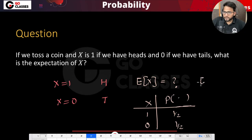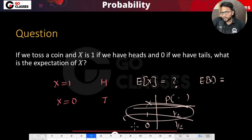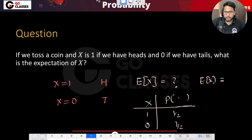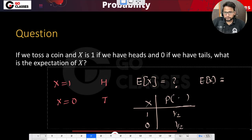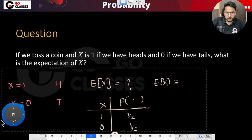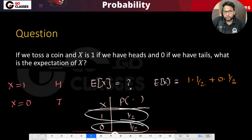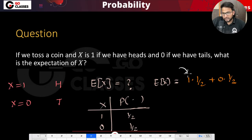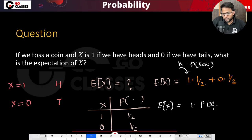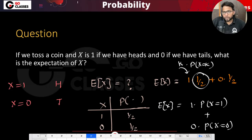The expectation of x is computed by multiplying each value by its probability and summing them up. So it is one times one-by-two plus zero times one-by-two. In technical terms, this is the value k times the probability of x being k, summed over all k. So expectation of x equals one times probability of x being one plus zero times probability of x being zero, which gives one-by-two plus zero, equaling one-by-two.